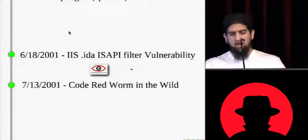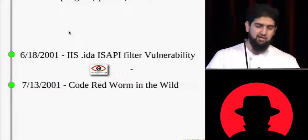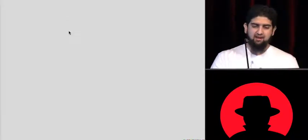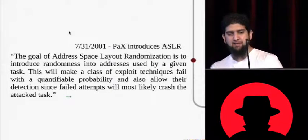In 2001, IIS, the IDA ISAPI bug hits wild, code red goes out. There's fancy graphs showing how many things were exploited that we'll skip because I'm running out of time.